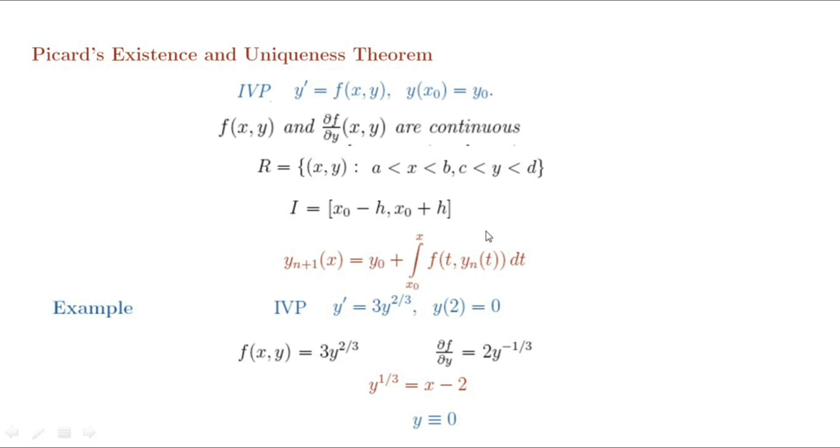An alternative approach is to approximate a solution to the initial value problem by constructing a sequence of functions that converges to the solution. It is precisely the approach we will use for the proof of the Picard's theorem.